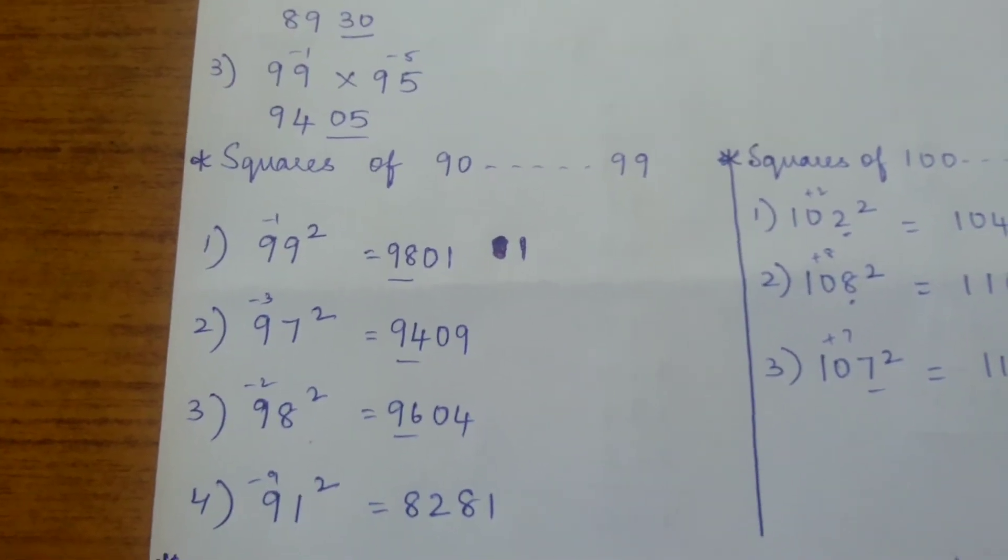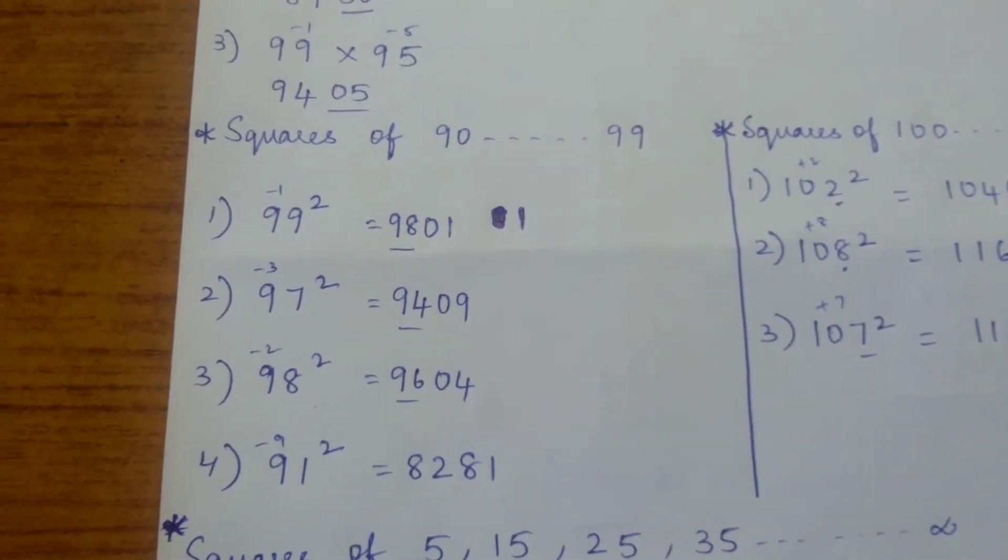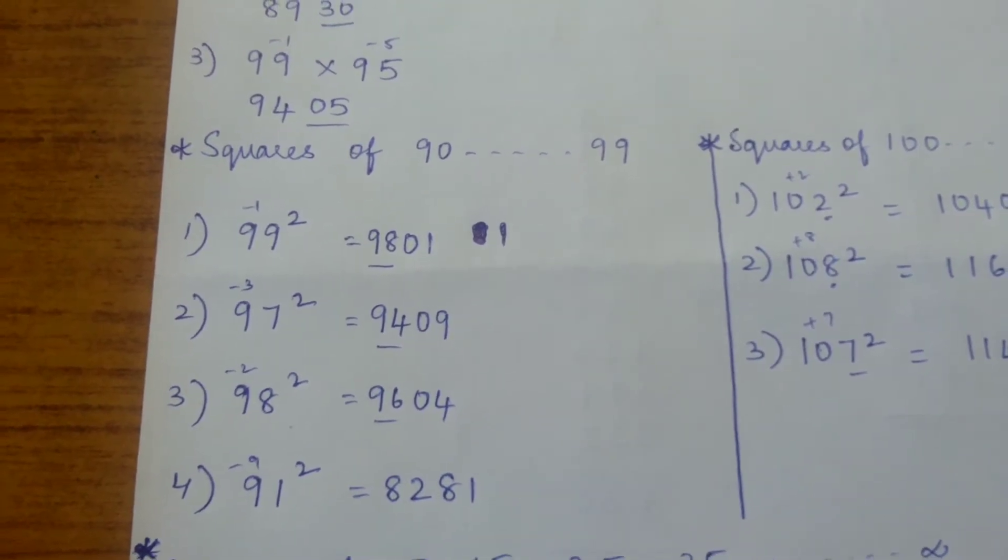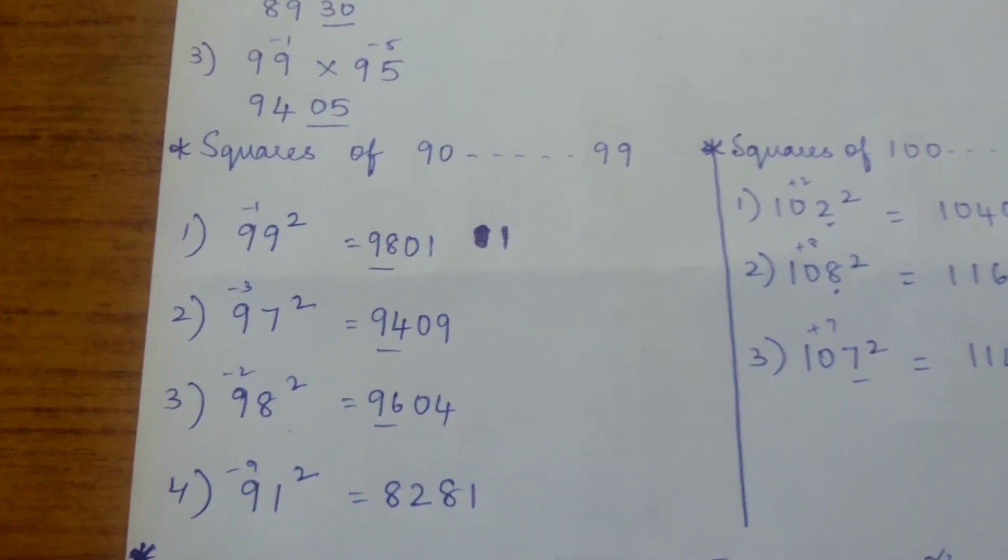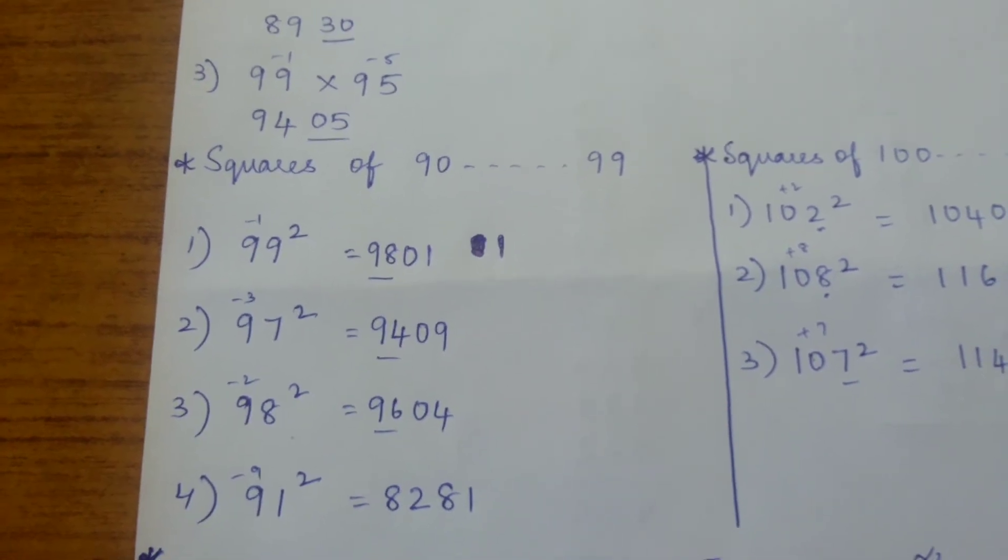91 squared is 9 less than 100, so the last two digits will be 81. After we get the last two digits, subtract the difference from the given number. 99 minus 1 is 98, 97 minus 3 is 94, 98 minus 2 is 96, and 91 minus 9 is 82.